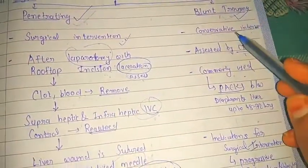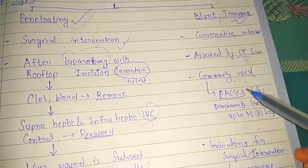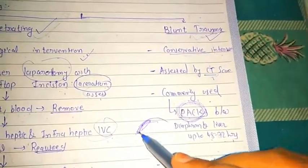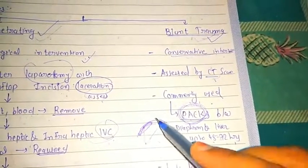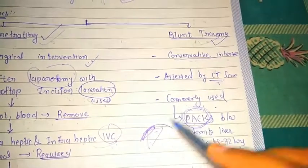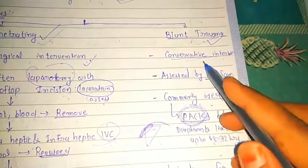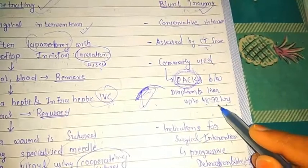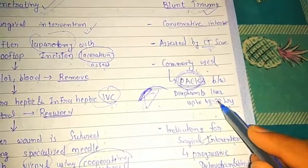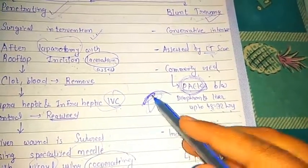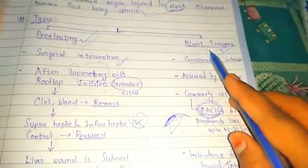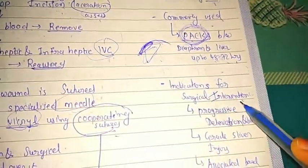The commonly used conservative intervention is packs. We place the packs between the diaphragm and the liver in blunt trauma injury for 48 to 72 hours, after which the packs are removed. If it is a very severe blunt trauma, we go for surgical intervention.